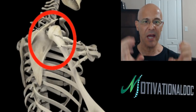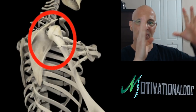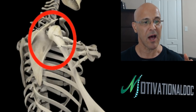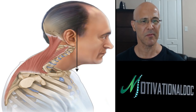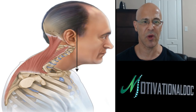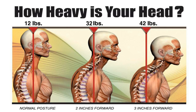When the rhomboids weaken and stretch, the opposite side — the pec muscles — becomes tighter and shortened. Muscles work hand in hand: when one weakens and stretches, the other side contracts. Forward head posture means the ears are way out in front of the shoulders, causing rounded shoulders and stretching of the upper back muscles including the rhomboids. Our head weighs 12 pounds; for every inch forward, it's an additional 10 pounds of load.